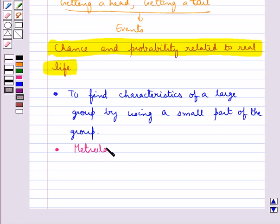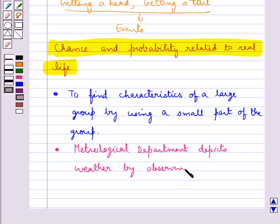Also, it has one important use. The meteorological department depicts weather by observing trends from the data over many years in the past.